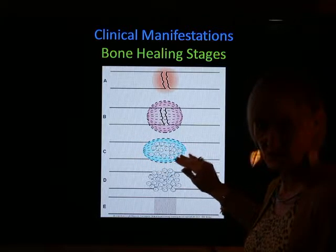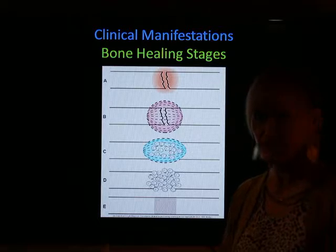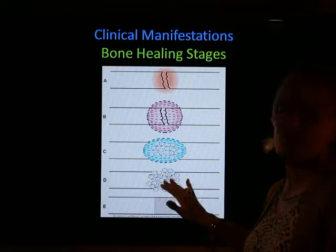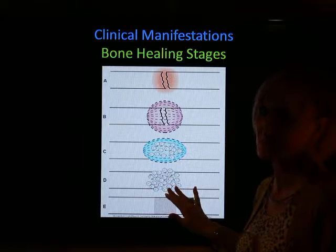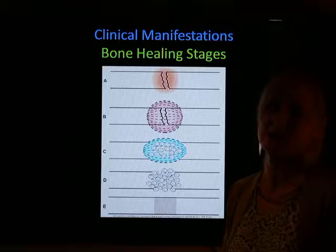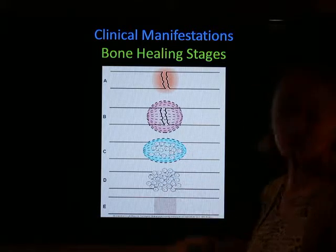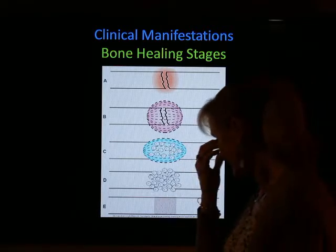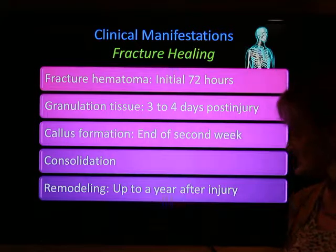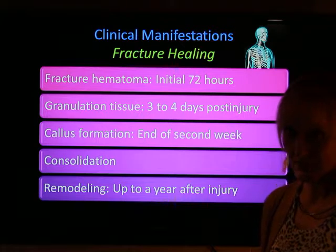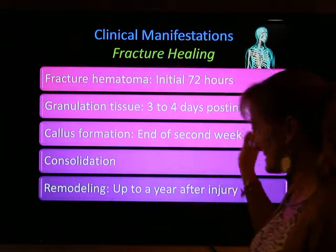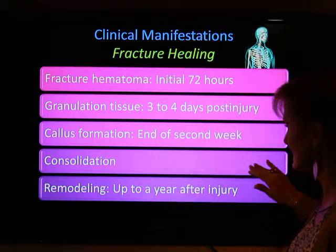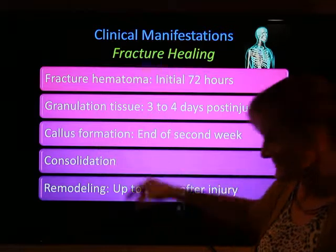You would not take the cast off at six to eight weeks and have the patient resume all activities. They need to start walking on it, building it up, and then after about four to six months — depending on how bad the break was — they can resume activities, especially contact sports. You don't take the cast off and send them right back out to the football team.